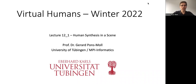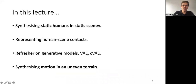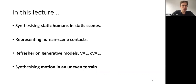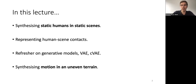Hello, welcome to Virtual Humans Lecture 12.1: Human Synthesis in a Scene. In this lecture we will see how to synthesize static humans in static scenes, how to represent human-scene contacts, and we will give an overview of typical models used to produce multiple outputs conditioned on an input — models based on variational autoencoders and conditional variational autoencoders, which are used to synthesize multiple possible human poses conditioned on some portion of the scene.